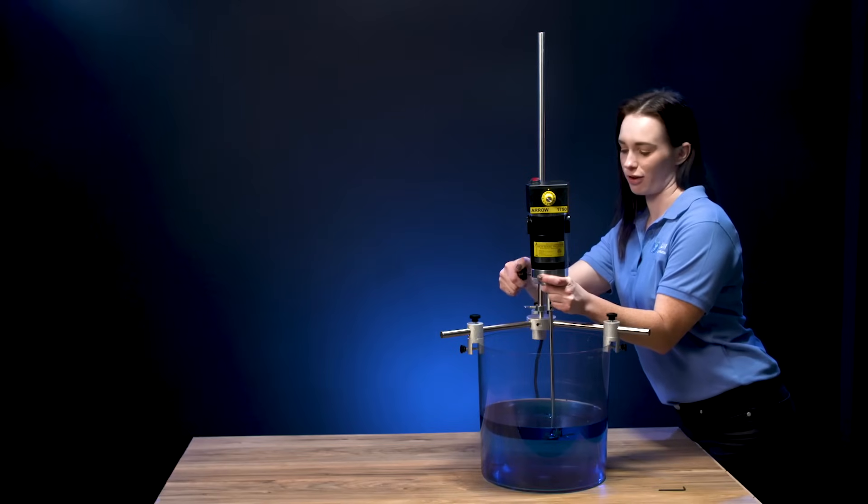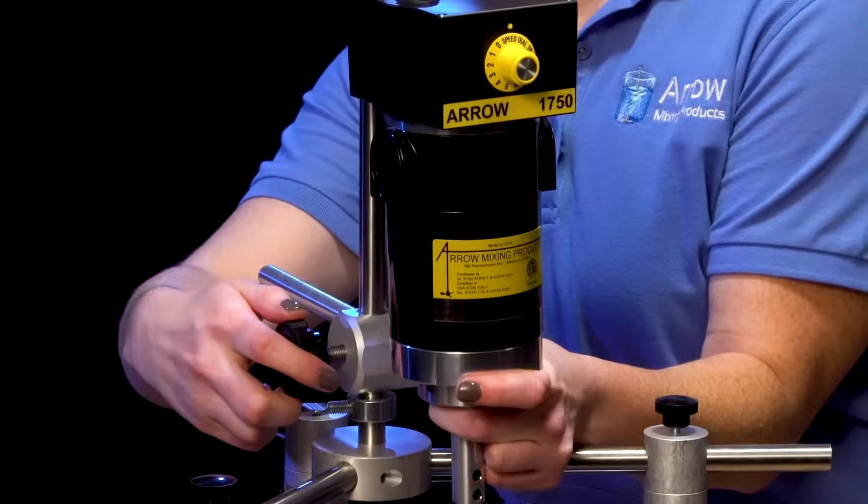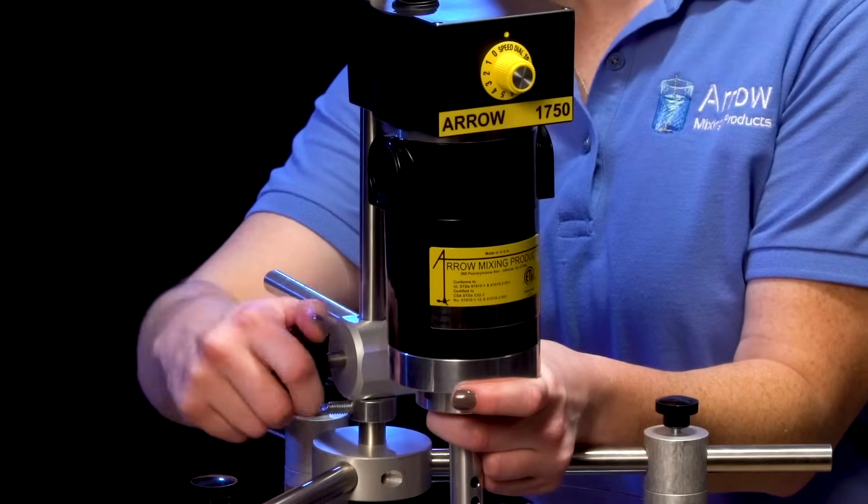Slide the clamp and stirrer down the center rod. Secure the clamp and stirrer.